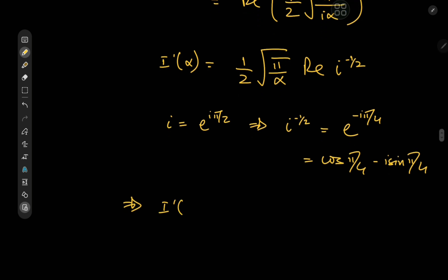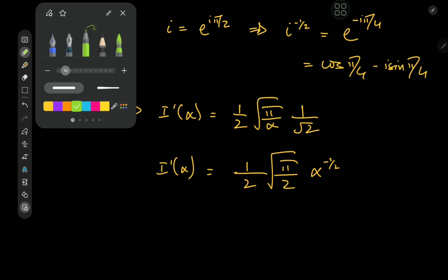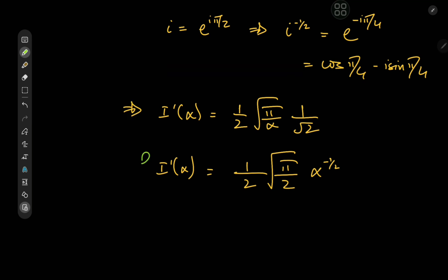So the derivative of the target integral function equals one half times root π over two times α to the negative one half, which simplifies to one half times root π over two times α to the negative one half. Now that we have I prime of α, we recover I(α) by integrating with respect to α.